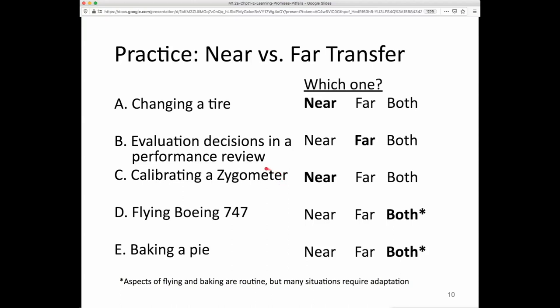Calibrating some medical device, a zygometer is a very new medical device but it gets used in a reasonably procedural step-by-step way that requires near transfer. These last two examples have elements of both because there are routine aspects of flying or baking but there also can be novel aspects where there is higher variability that suggest farther transfer.